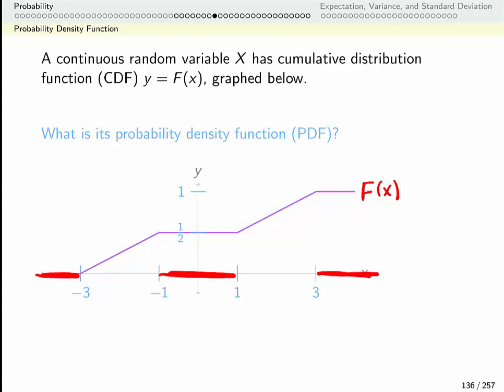So notice in the middle this accords with the computation we just did. We said the probability of being between negative 1 and 1 is 0 and so my density there is going to be 0.